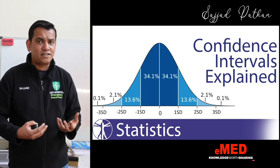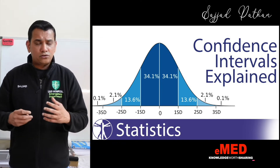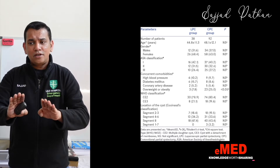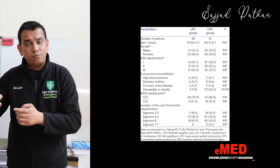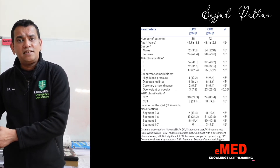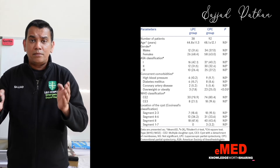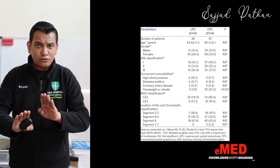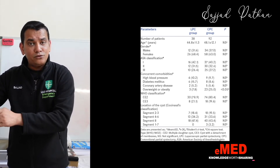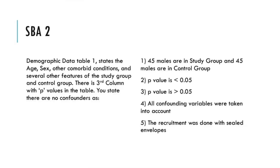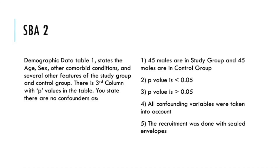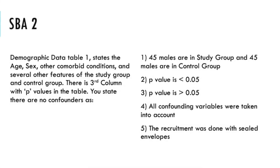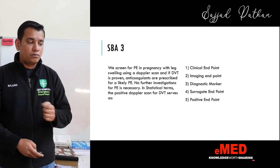So when looking at results, you want p-value less than 0.05 to show a difference. But in the demographic data table, you do not want to see a difference between the two groups — so the p-value should be greater than 0.05. That is the answer: option three. Let us now look at question three.